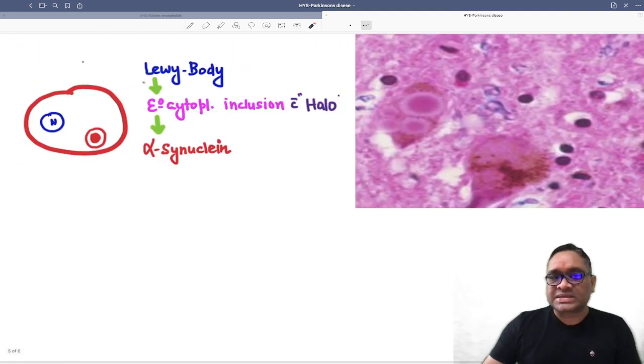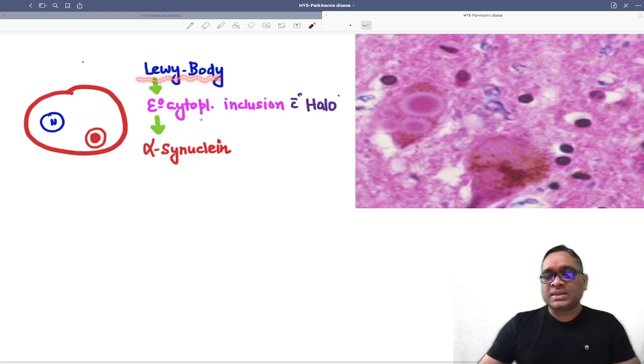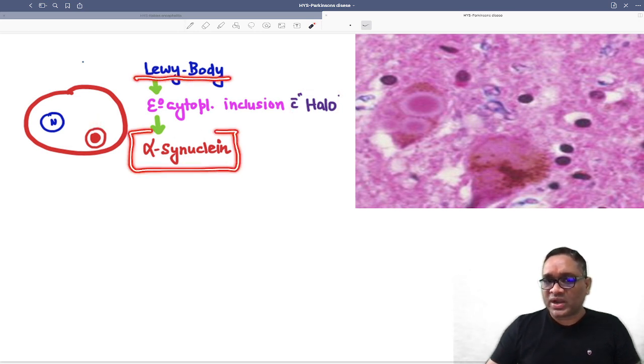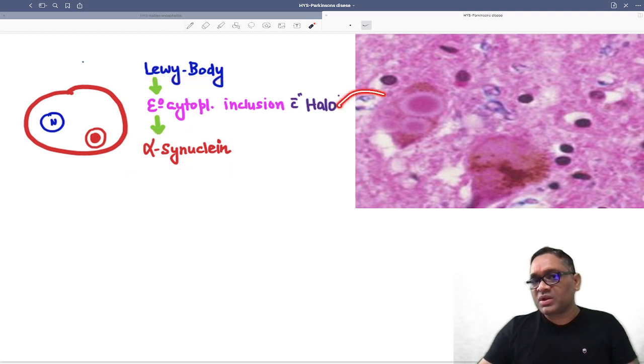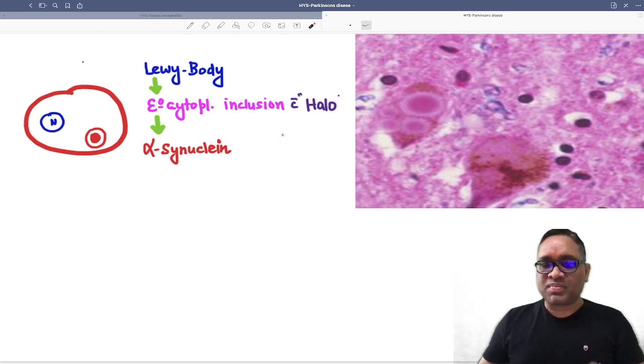When you take a section, you will see neurons showing Lewy bodies. What is a Lewy body? These are misfolded proteins—eosinophilic cytoplasmic inclusions with a halo around them, as you can see in this diagram. What is this Lewy body composed of? Misfolded alpha-synuclein. You can see the eosinophilic inclusion with a halo around it. That is the Lewy body of Parkinson's disease.